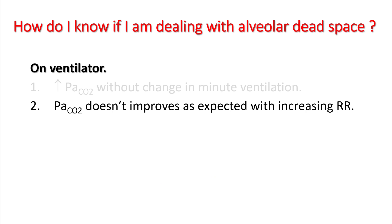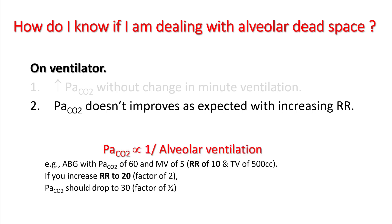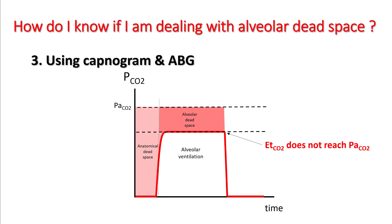Another way to suspect dead space is if your PaCO2 doesn't improve as expected with increasing the respiratory rate. You know that PaCO2 is inversely proportional to alveolar ventilation, so if you double the respiratory rate, your PaCO2 should drop by half. However, if you are having alveolar dead space issues, your denominator is much lower, so your PaCO2 doesn't improve as expected despite increasing the respiratory rate.